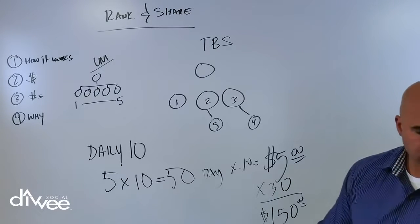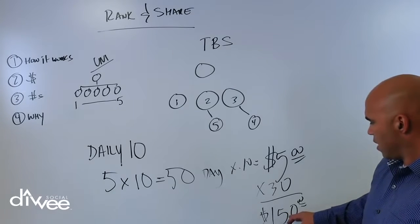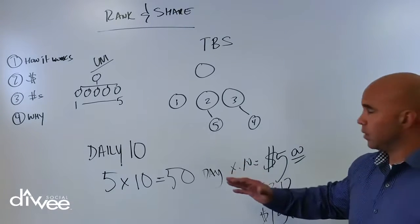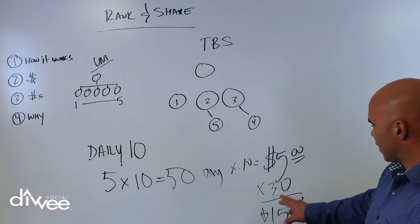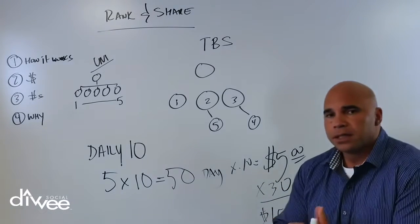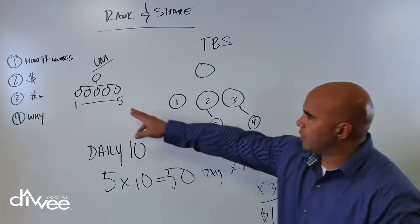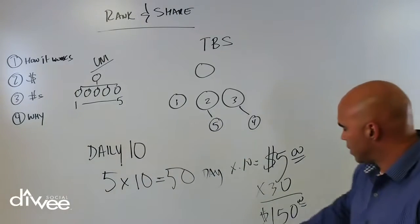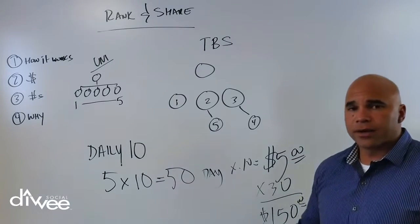Let's say that the average rank and share is paying ten cents. So fifty a day times ten cents equals five dollars a day. And if you did it for a month, you're now making one hundred fifty bucks a month. At twenty-five cents you're making twelve fifty a day, times thirty, that's three hundred seventy-five.